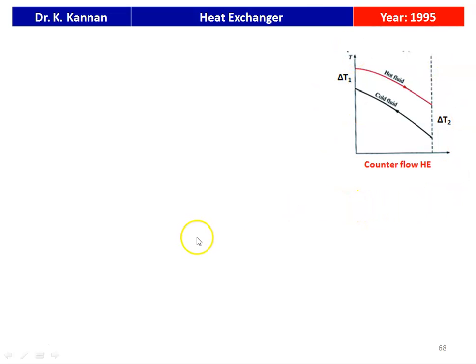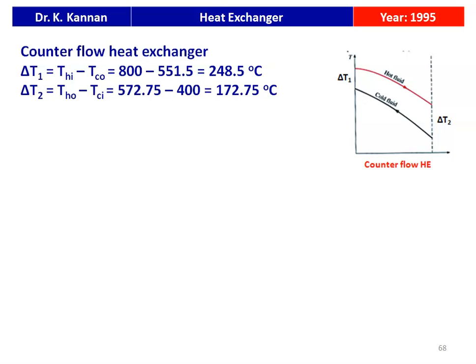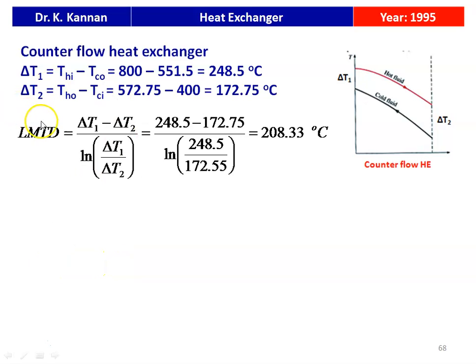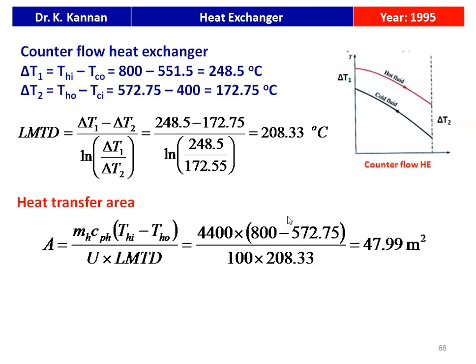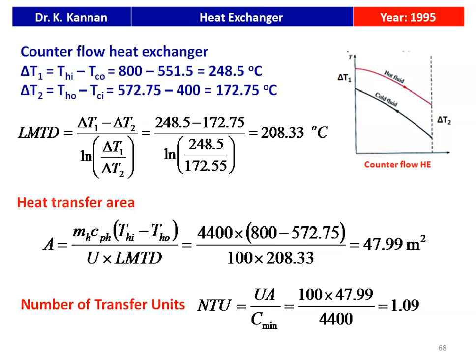For the counter flow temperature profile, ΔT1 = THI − TCO = 800 − 551.5 = 248.5°C and ΔT2 = THO − TCI = 572.75 − 400 = 172.75°C. LMTD = (248.5 − 172.75) / ln(248.5/172.75) = 208.33°C. Heat transfer area A = CH × (THI − THO) / (U × LMTD) = 4400 × 227.25 / (100 × 208.33) = 47.99 m². NTU = U × A / C_min = 100 × 47.99 / 4400 = 1.09.